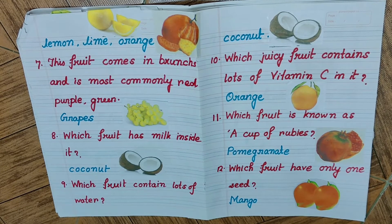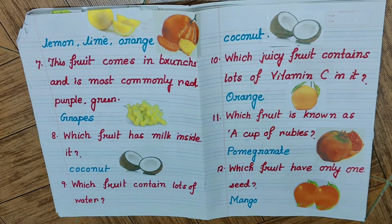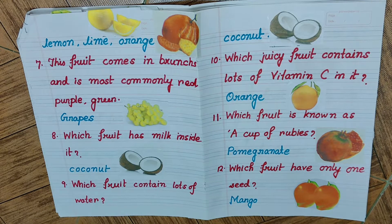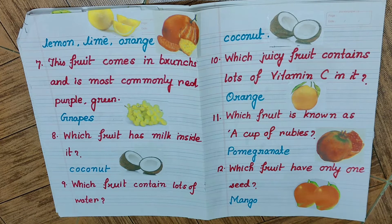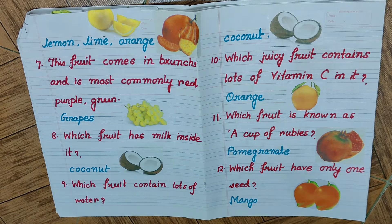Question number nine: which fruit contains lots of water? Again the answer is coconut. Coconut contains lots of saline water inside the fruit shell. Question number ten: which juicy fruit contains lots of vitamin C? The answer is orange. Orange is a very vital source of vitamin C.